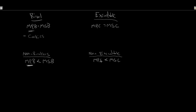To summarize simply: rival means if I eat it, you can't. Non-rival means I can eat it and so can you — we both get benefit from the same thing. Excludable means I can't access it unless I pay for it. Non-excludable means I can enjoy it even if I didn't pay for it.